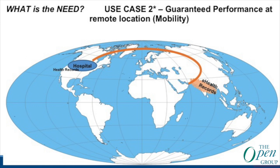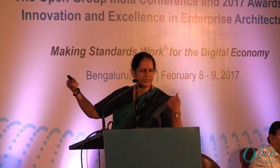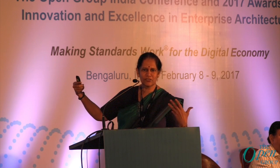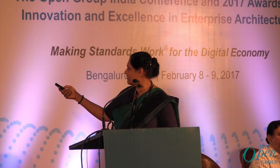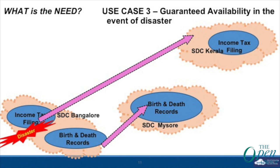The other use case is mobility. You travel abroad and your health records are aligned with some service provider. What will enable them to make those records available if you fall sick and your hospital needs them with reasonable access time? Because if the access times are really bad, your X-rays will never be able to transfer because they are heavy files.